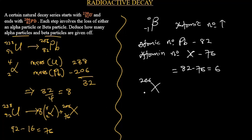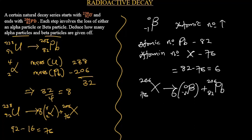So when element X with mass number 206 and atomic number 76 gives off beta emission — 6 times (0, −1) — we get lead-206 with atomic number 82. When you multiply 6 by 0 you get 0, so it has no effect on the mass number. When we multiply 6 by negative 1 we get negative 6, and negative 6 plus 82 gives us 76 — confirming the atomic number balances correctly.